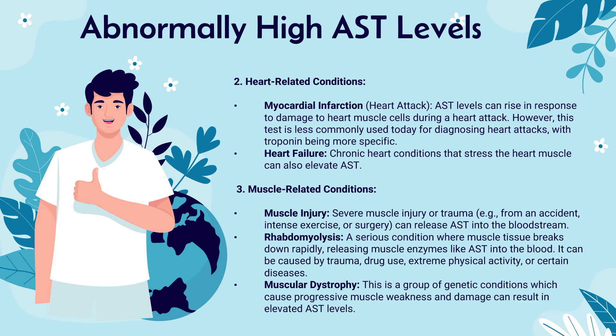Moving on to muscle-related conditions: muscle injury, rhabdomyolysis, and muscular dystrophy. Severe muscle injury or trauma from an accident, intense exercise, or surgery can release AST into the bloodstream, raising levels on a blood test. Rhabdomyolysis is a serious condition where muscle tissue breaks down rapidly, releasing muscle enzymes like AST into the blood — caused by trauma, drug use, extreme physical activity, or certain diseases. Muscular dystrophy is a group of genetic conditions causing progressive muscle weakness, and the resulting damage can also elevate AST levels.